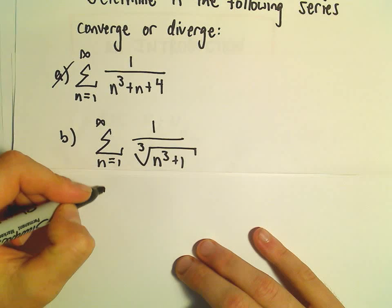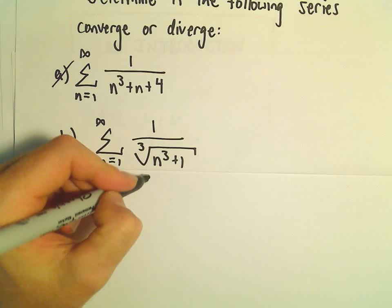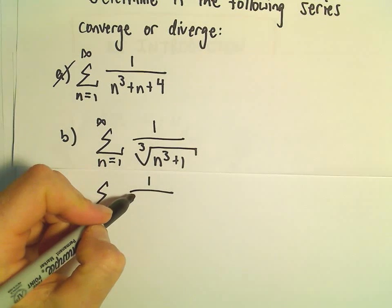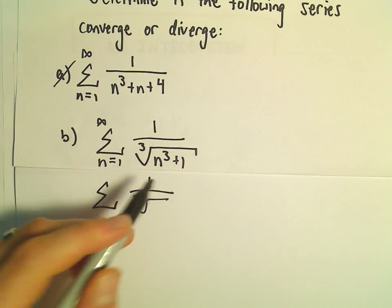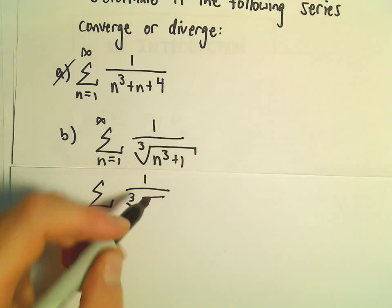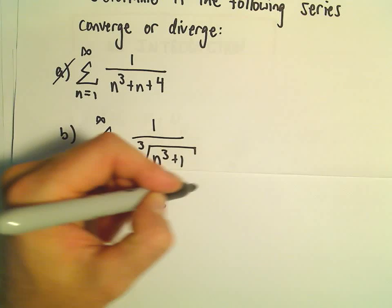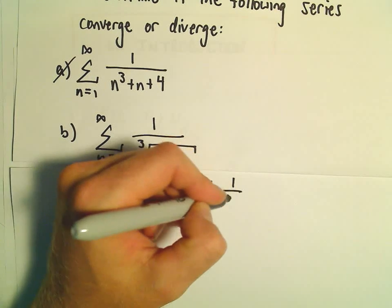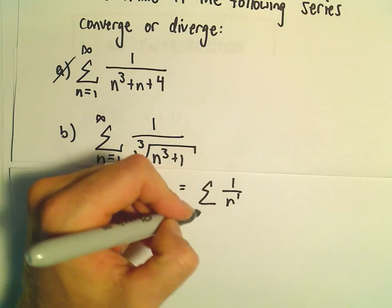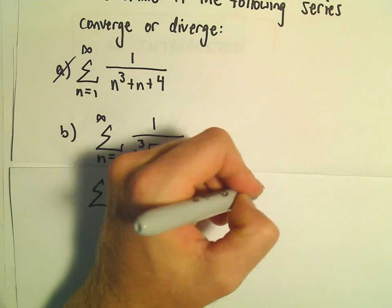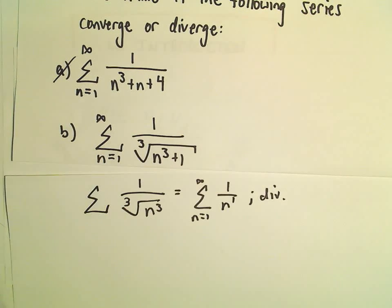I think about it in terms of dominant terms. We've got the cube root. The biggest power underneath the radical is n cubed. Forget about the plus 1. If we simplify that, we get 1 over n to the first. And 1 over n to the first, from 1 to infinity, this would be a divergent p-series.